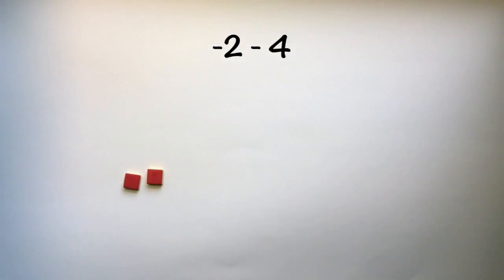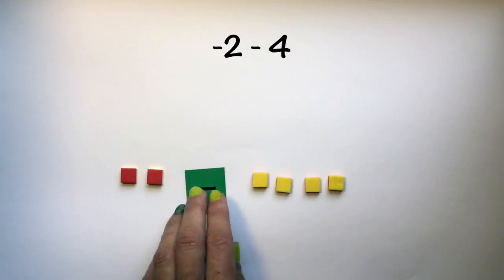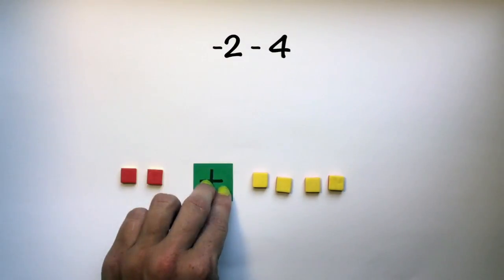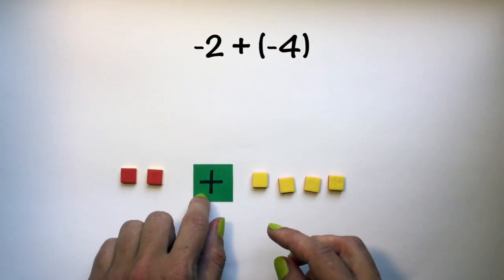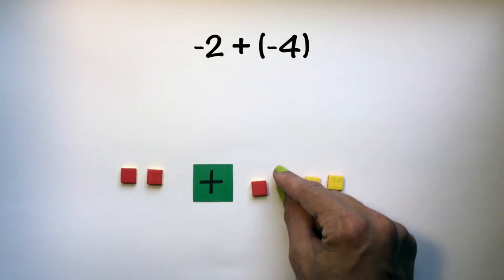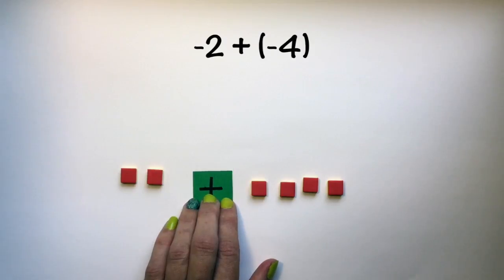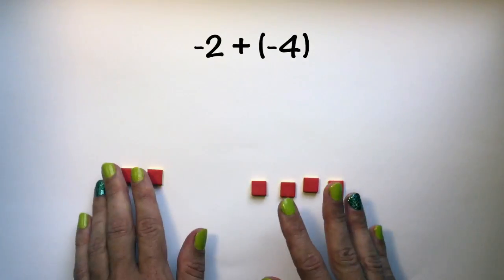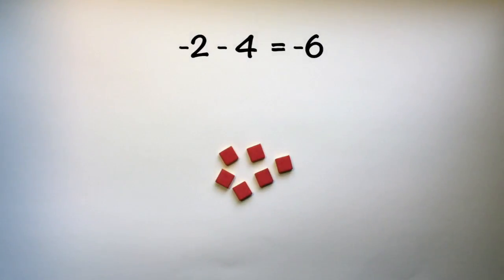Now let's use our adding the opposite method. We have negative 2 minus 4. I am going to change my subtraction to addition and then change the sign of the following number. So if I am changing it to addition I have to also change positive 4 to negative 4. I can now remove my addition sign and combine my tiles, and I am left with negative 6.